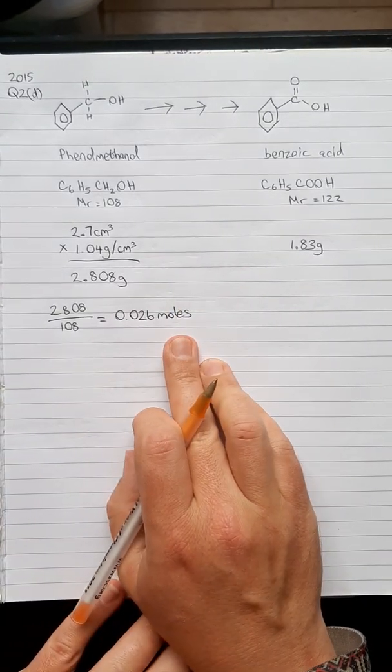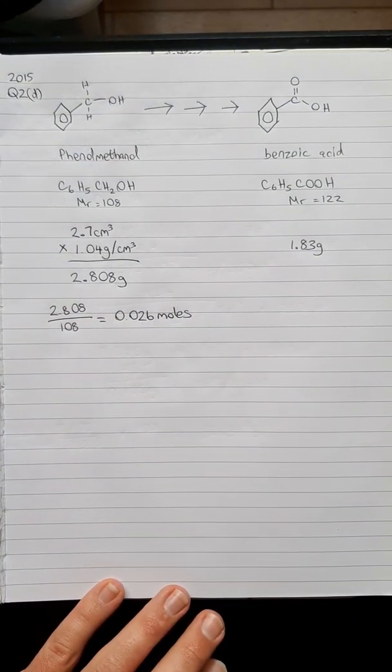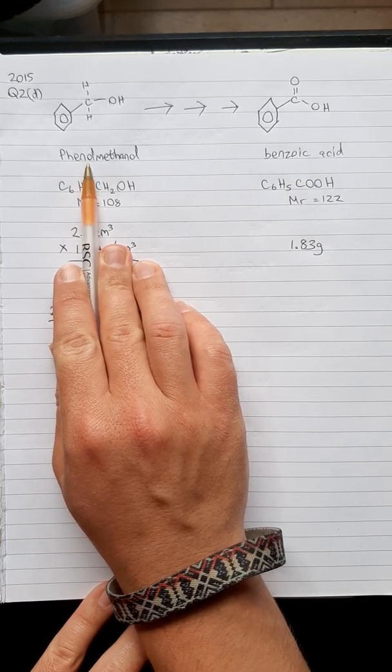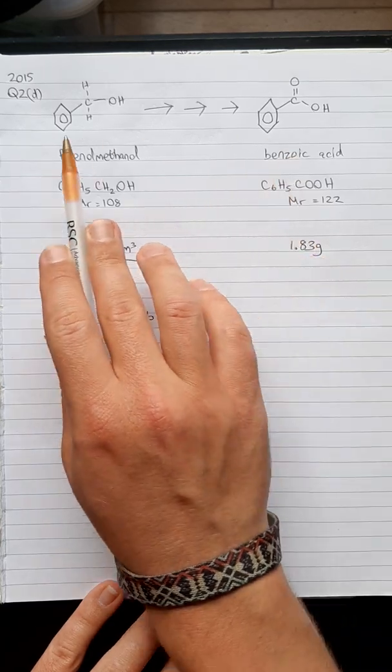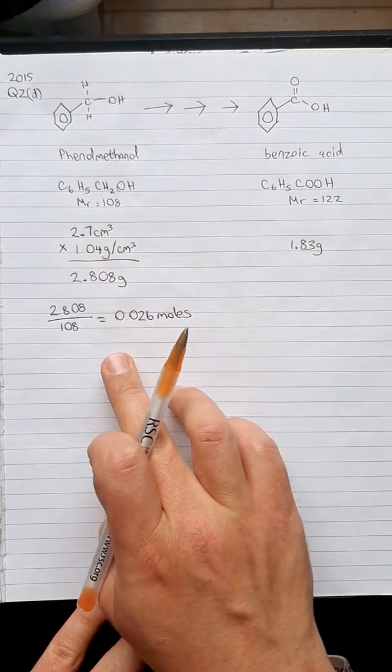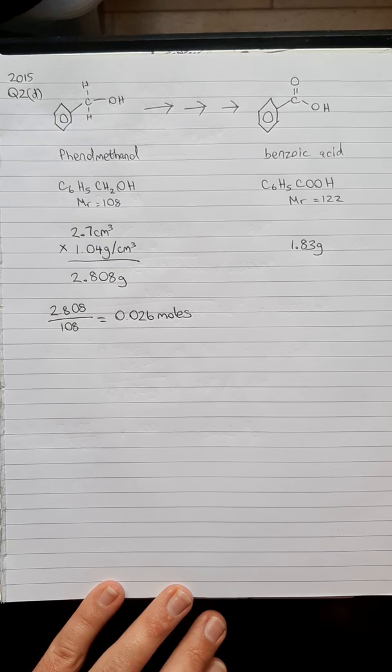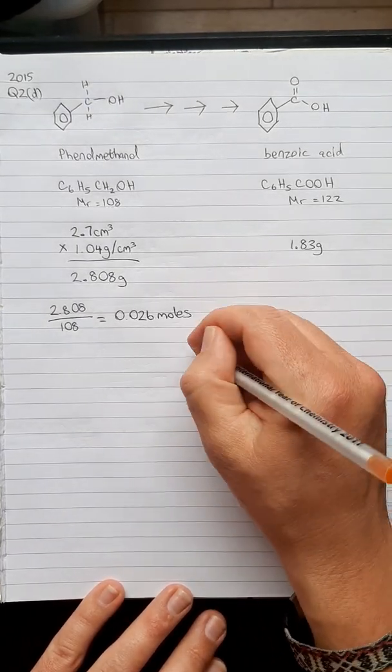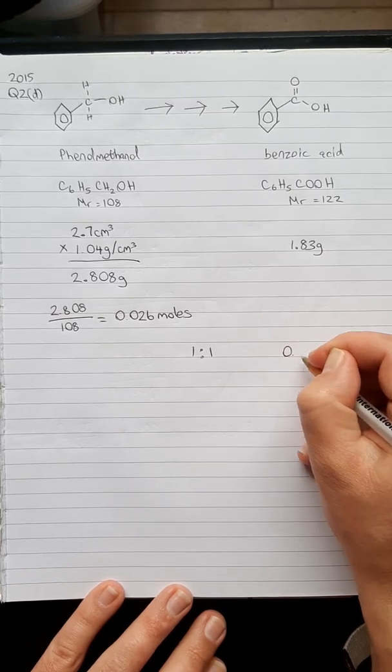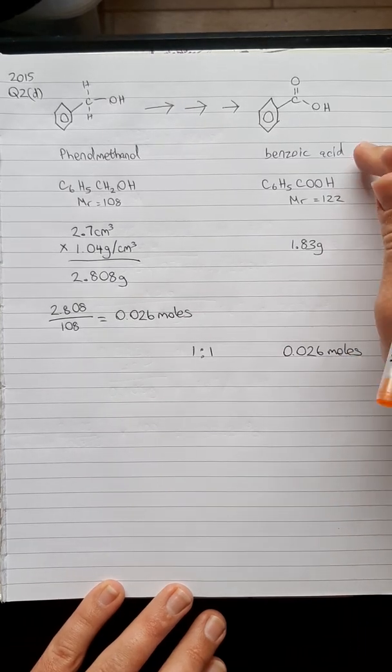We're starting with 0.026 moles of phenylmethanol. At the very start of the question it says one molecule of phenylmethanol can be oxidized into one molecule of benzoic acid, so there's a 1:1 ratio. If we are starting with 0.026 moles of phenylmethanol, technically speaking we should be able to get, because of this 1:1 ratio, 0.026 moles of benzoic acid as well.